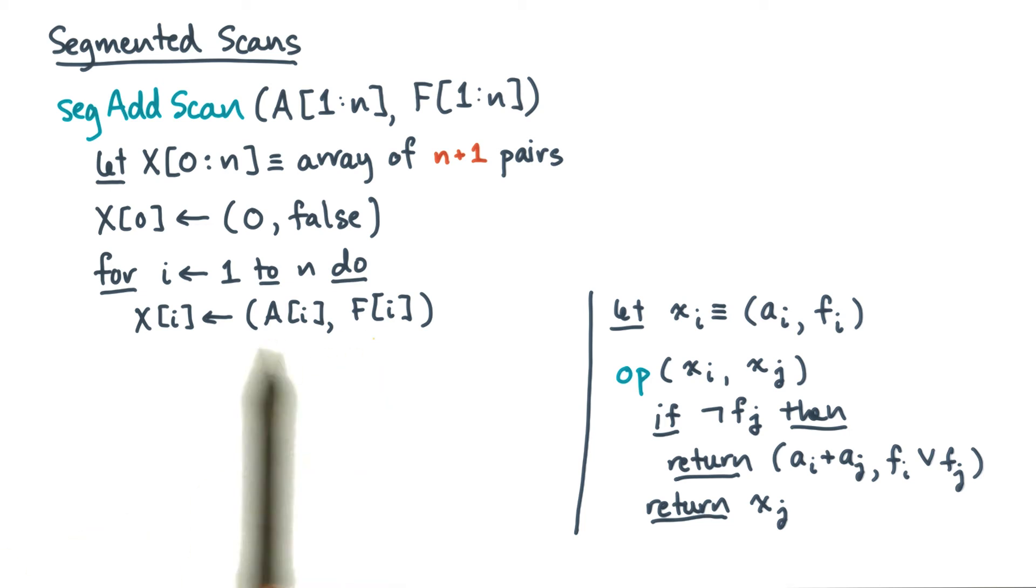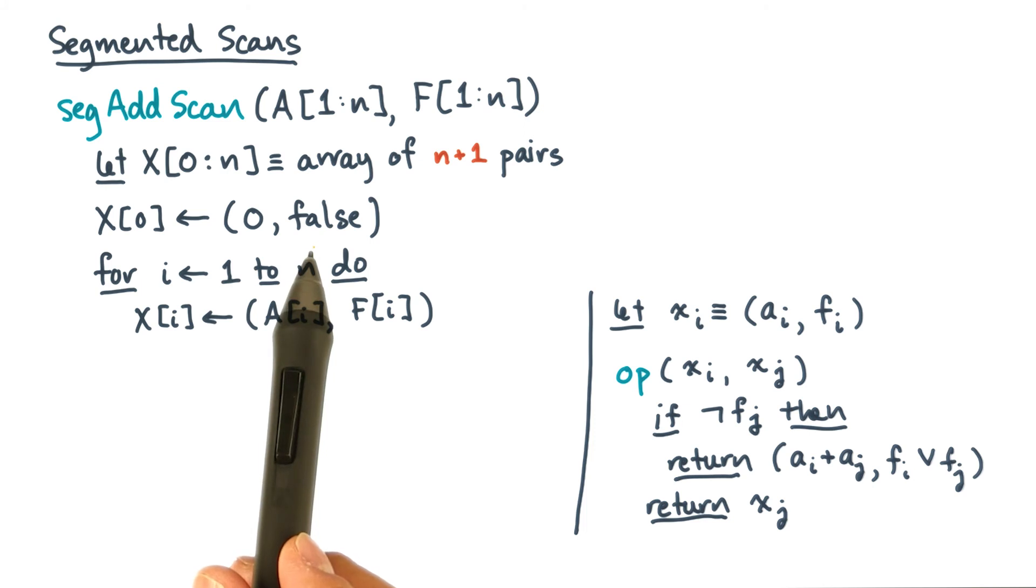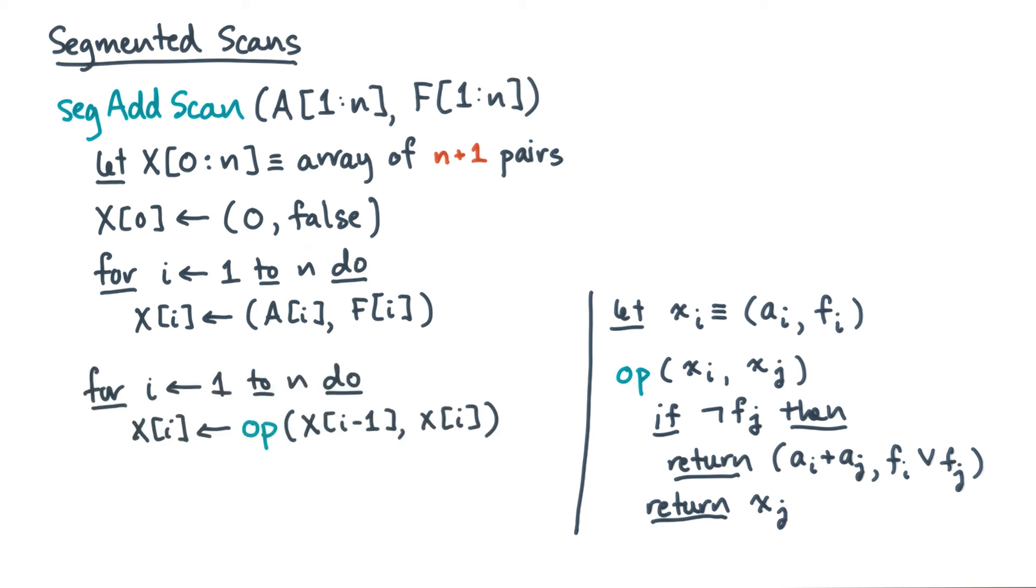This next snippet of code actually builds the array x. You'll notice it builds the pairs, but it also builds a special initial value, which is set to 0 and false. In fact, 0 and false are the identity elements for the two operators, addition and logical or. Once x is all set up, we can do a scan using our funny new operator.